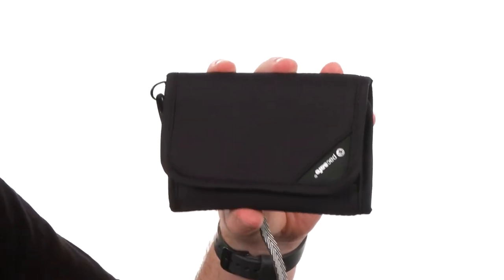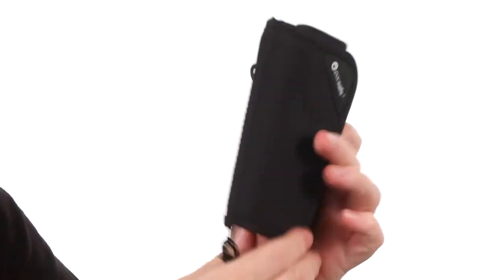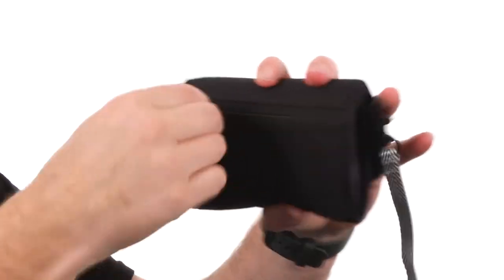This wallet is made out of a rugged ripstop nylon. It's got a tri-fold design held together with a hook and loop strip. On the back we've got a zipper pocket, perfect for smaller items like loose change.